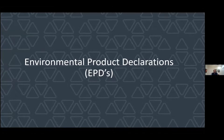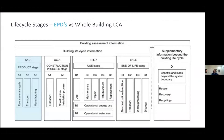EPDs are where we really want to go for making these comparisons because they will be supplier-specific. However, the vast majority of EPDs — nearly all, though not all — are generally A1 to A3, the product stage: what it takes to get a material manufactured and out the gate. EPDs don't include impacts associated with the construction process or end of life. Those stages are important when making a comparison across systems.